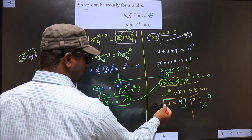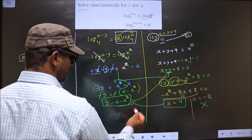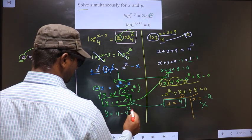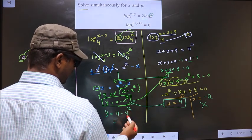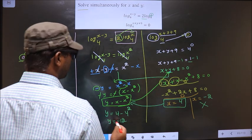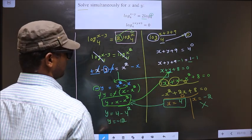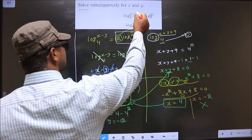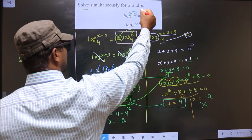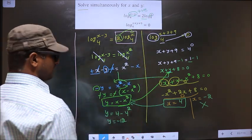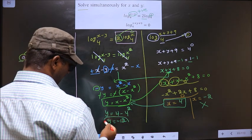Now substitute x = 4 to get y: y = 4 - 4² = 4 - 16 = -12. So y = -12. When we substitute x and y back into the equation, this results in a positive value.